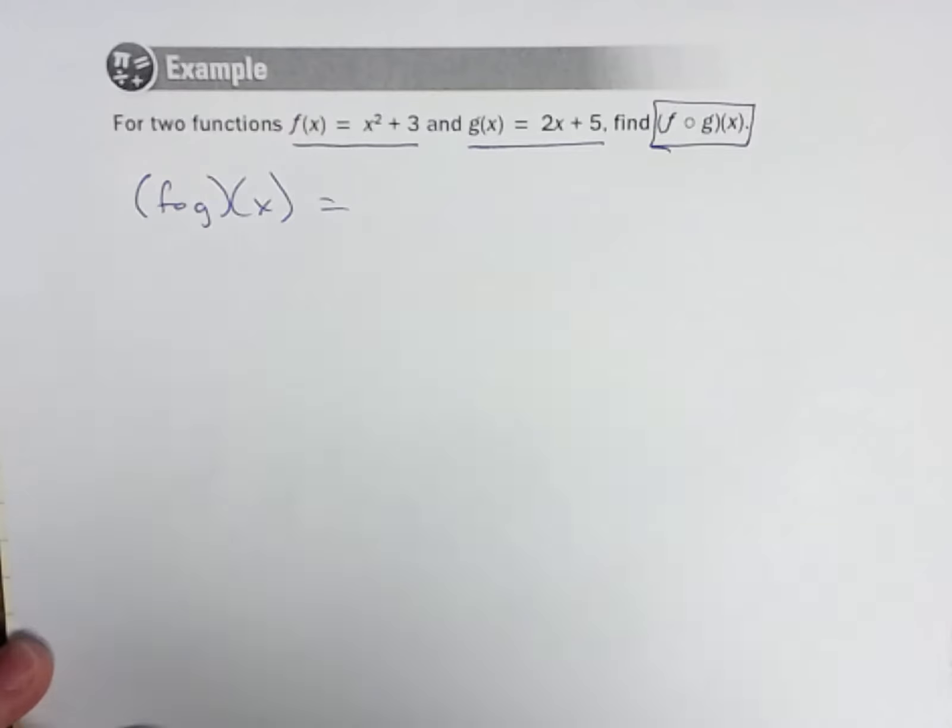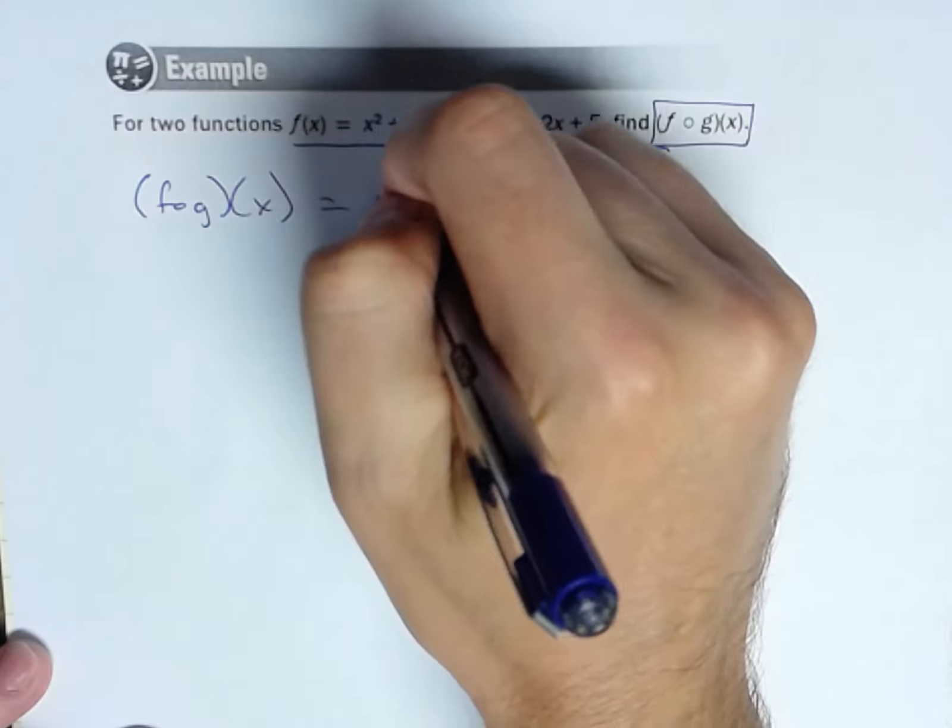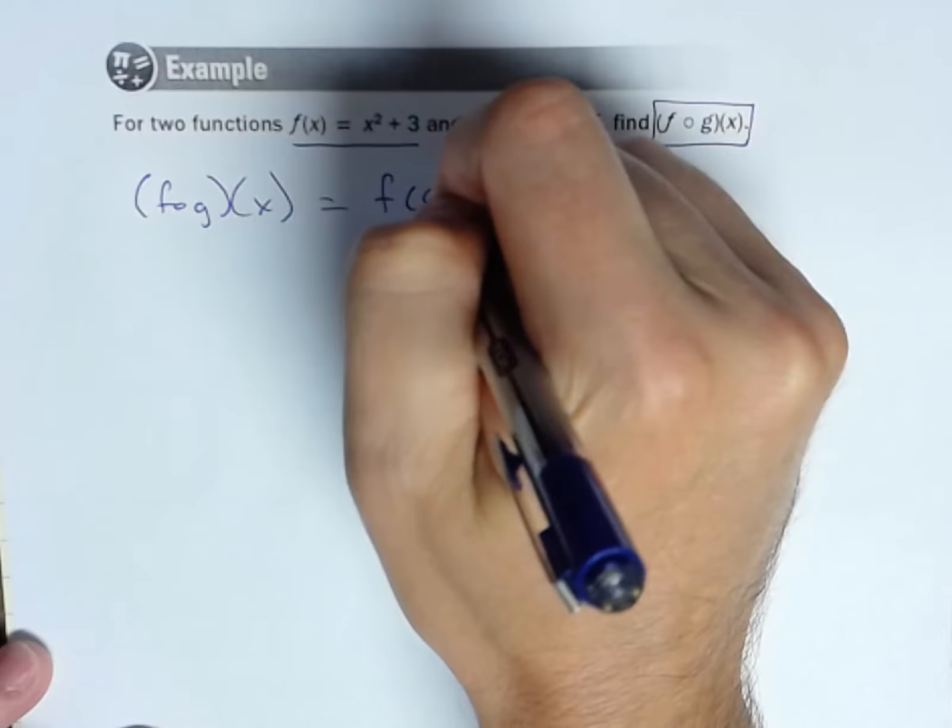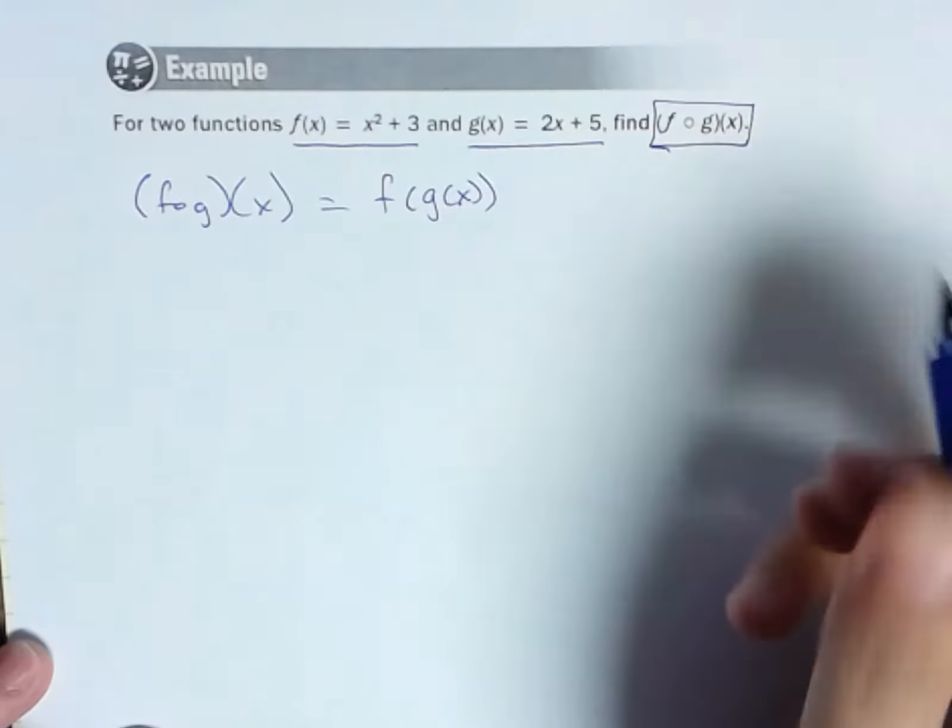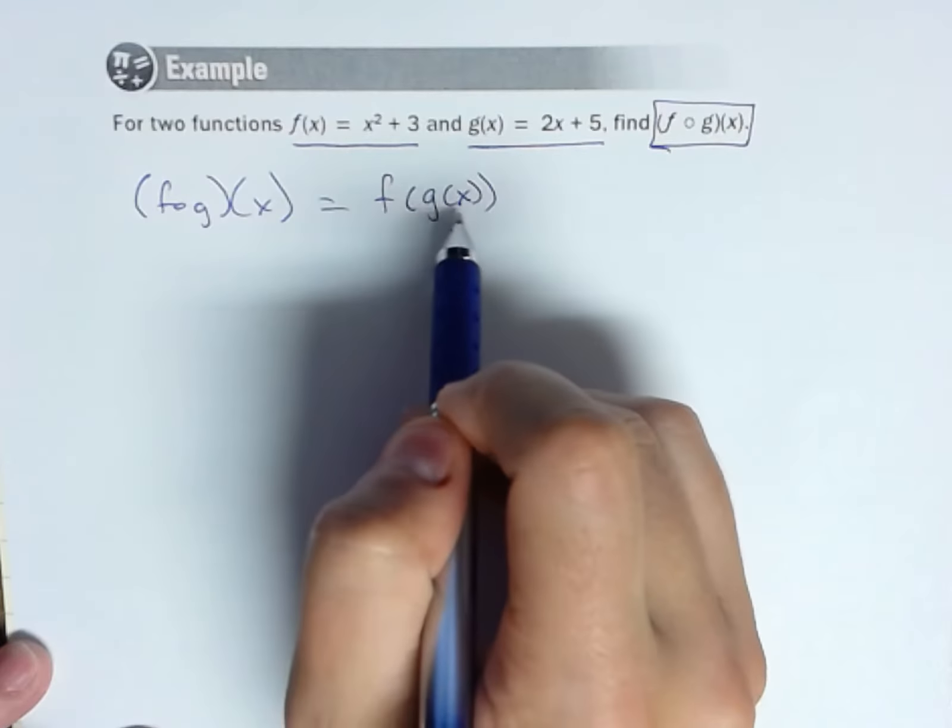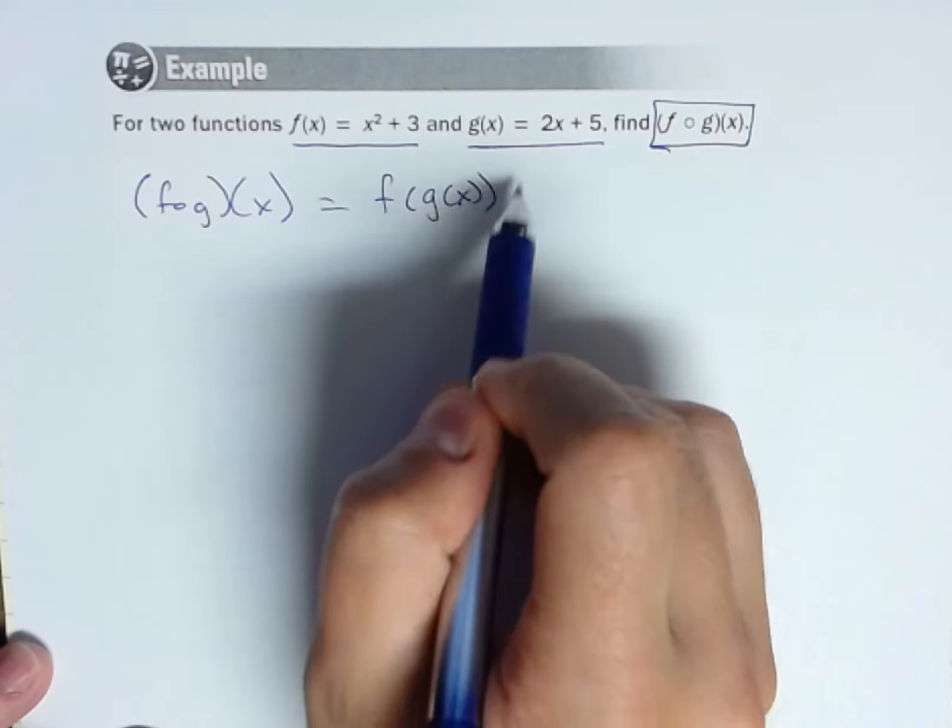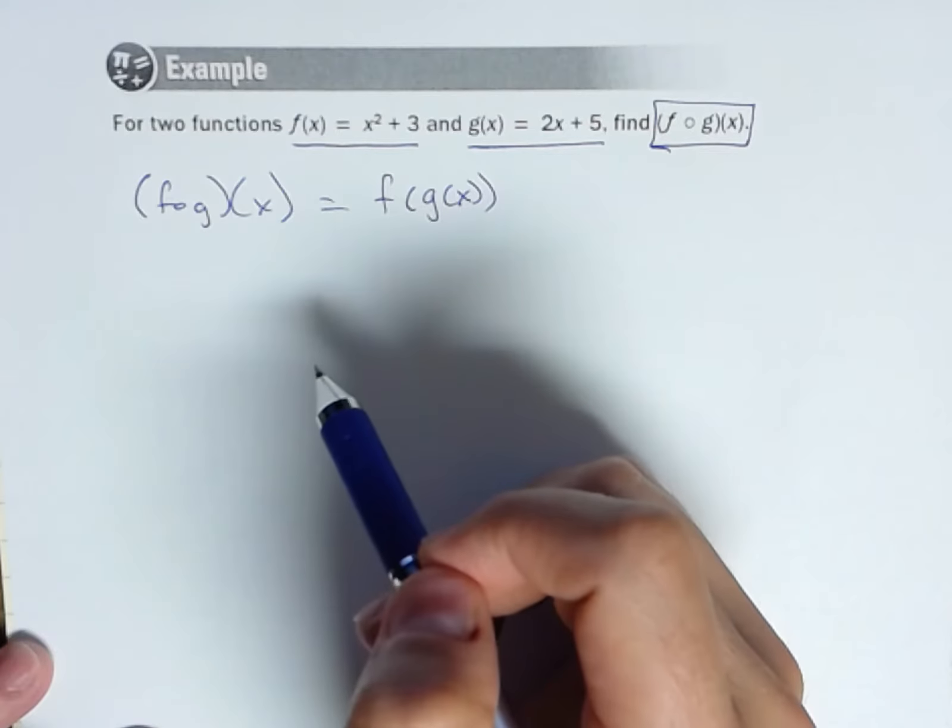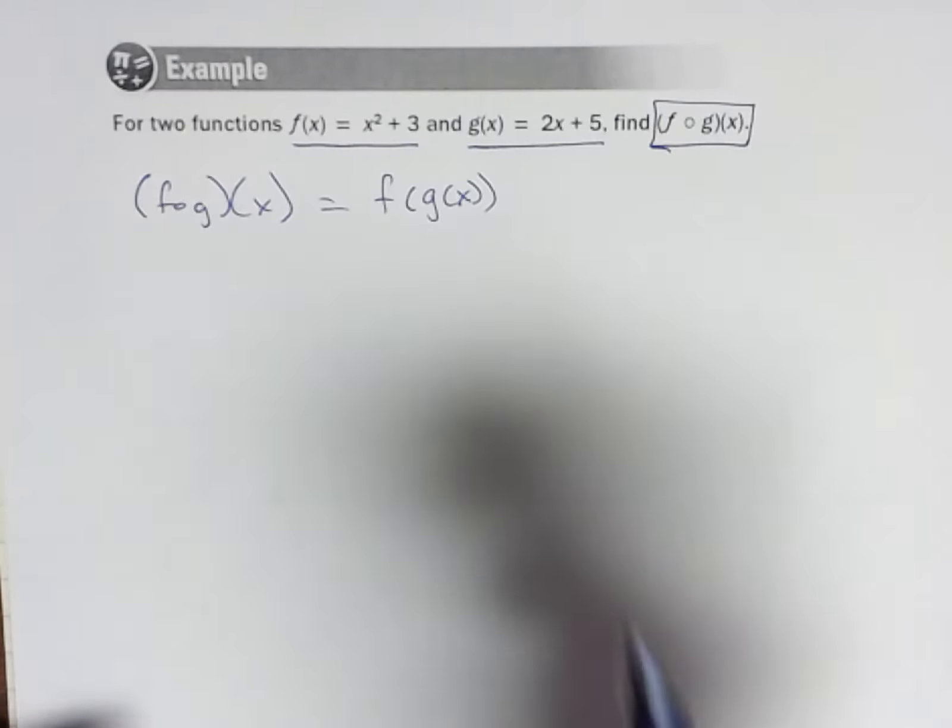So let me just revisit that. I know you've already seen it. Anytime I see that, I like to tell myself and even write it down: that means f of g of x. So it's a substitution. I'm going to plug this whole function g of x into function f. So it's a function into a function.